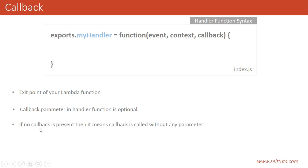If no callback is present, then callback is called without any parameter. This means that AWS Lambda will itself call the callback in the background, and this callback will not accept any parameter inside it.